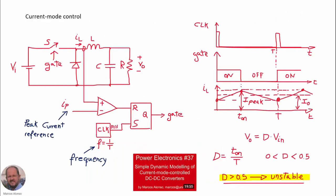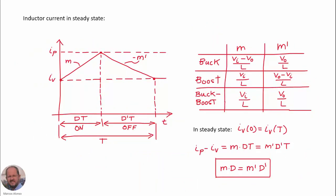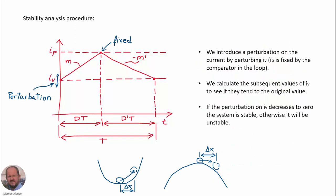Let's do a quick review of what we have seen in the previous video. First, we presented the current mode control using the comparator, the flip-flop and the clock. Then, we analyzed the inductor current waveform with different slopes during the on time and the off time, and the relationship between the slopes and the duty cycle and the complementary duty cycle. Here, we presented the stability analysis procedure by introducing a perturbation on the value of the current and analyzing the subsequent perturbations.